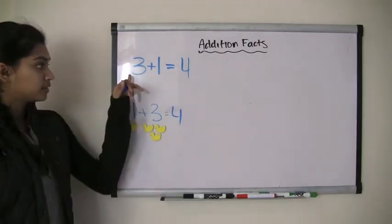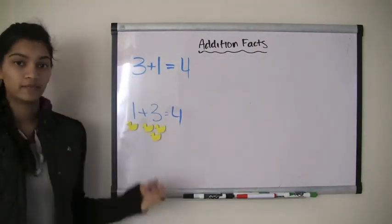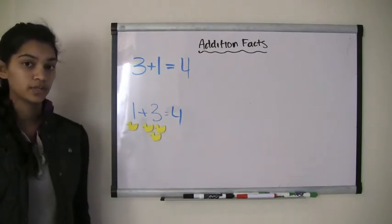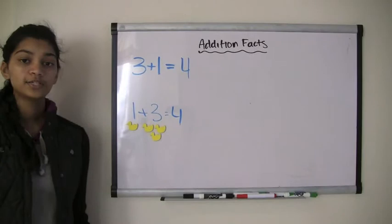So basically, 3 plus 1 and 1 plus 3 have the same answer. So we learned that if you flip the two numbers, the answer remains the same. Let's try one more problem.